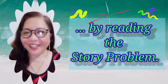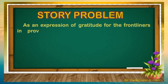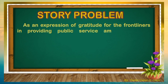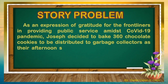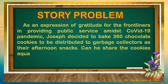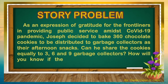Join the children in reading it aloud. Story problem: As an expression of gratitude for the frontliners in providing public service amidst the COVID-19 pandemic, Joseph decided to bake 360 chocolate cookies to be distributed to the garbage collectors as their afternoon snacks. Can he share the cookies equally to 3, 6, and 9 garbage collectors? How will you know if they will get an equal number of cookies?